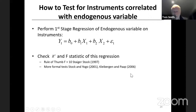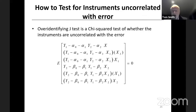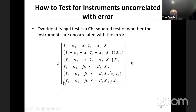We can look up tables and there are more analytic tests. What about testing that the instruments are uncorrelated with the error? If you over-identify this equation — so you have more instruments than endogenous variables, for example X2 minus 1, X1T minus 1, and so on — you'll have a test for over-identifying restrictions.